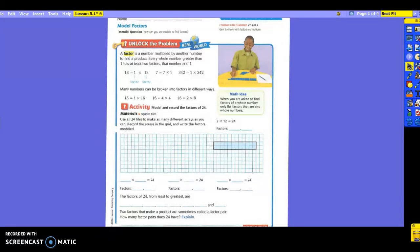Alright, working on a new chapter. We are going to show today how to model factors. You should know what a factor is. Let's read it to the top there where it's talking about it. A factor is a number multiplied by another number to find a product.